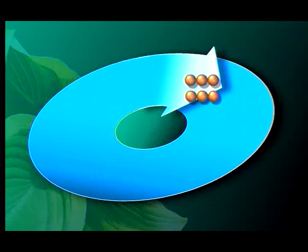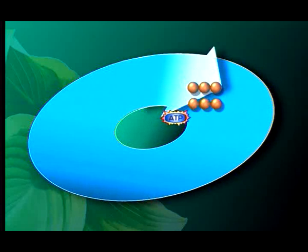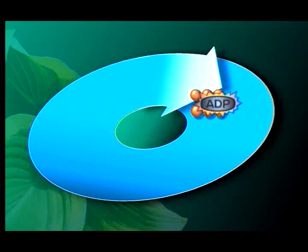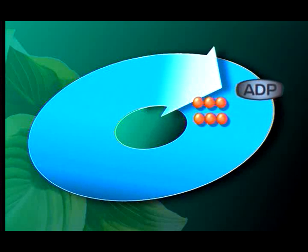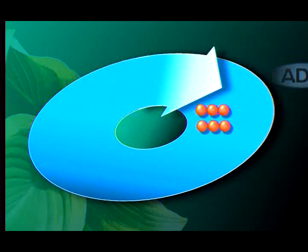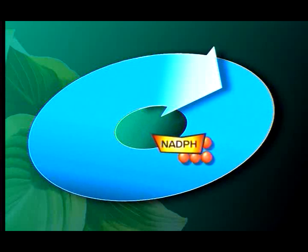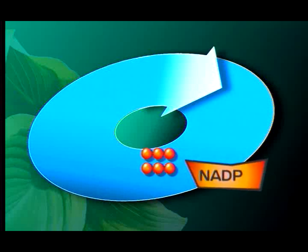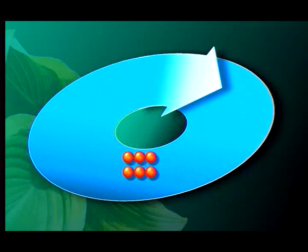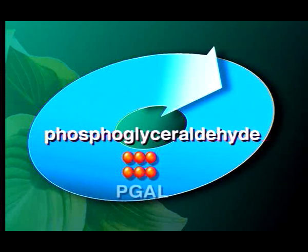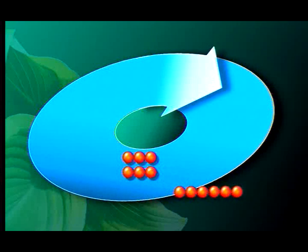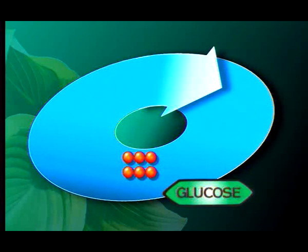This is where the ATP and NADPH formed during the light reactions come in. The ATP gives up its energy, becoming ADP. Likewise, the NADPH gives up its energy to become NADP. The energy from ATP and NADPH is used to drive reactions that change the three-carbon molecules, converting them into higher-energy molecules of phosphoglyceraldehyde, or PGAL. In several turns of the Calvin cycle, some of the PGAL leaves the cycle to form glucose and other molecules.